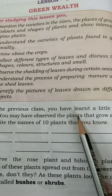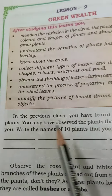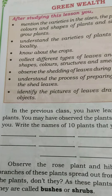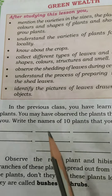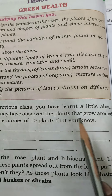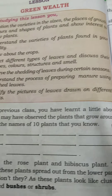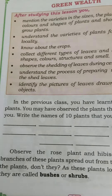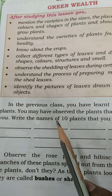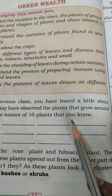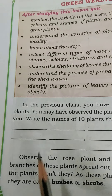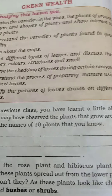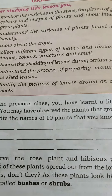In the previous class, you have learnt a little about plants. Now, you may have observed the plants that grow around you and the plants we have grown up with. Write the names of 10 plants that you know. If you have got 10 plants, you can use a pencil to write the plant names.